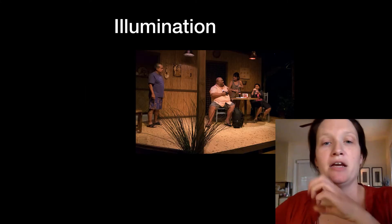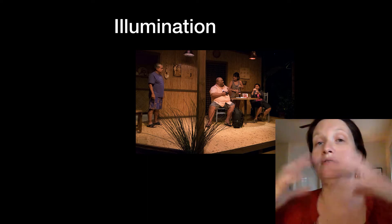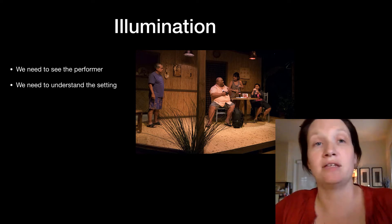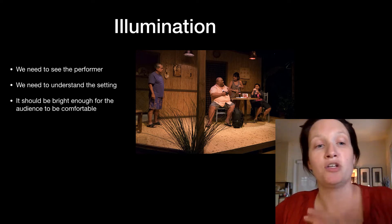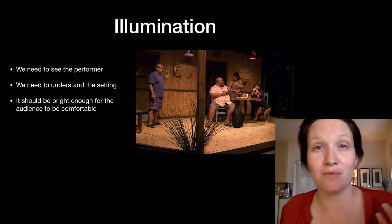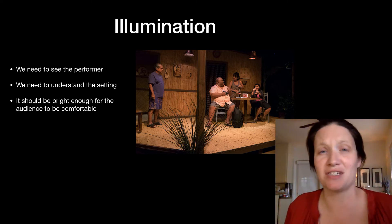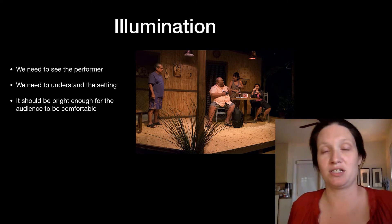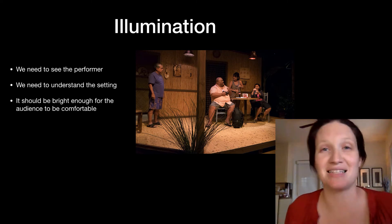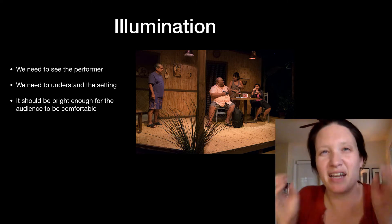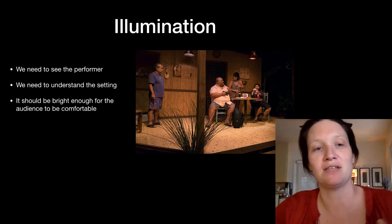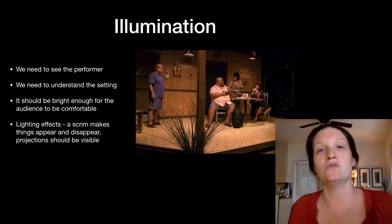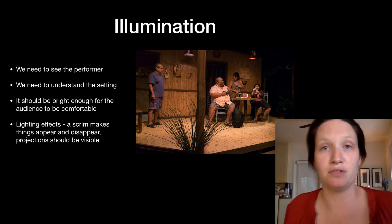Let's talk about illumination. Here is an image from a set that's well lit, illuminated across the whole space. We need to see performers and understand the setting around the performer. It should be bright enough that our eyes are comfortable — if it's too dim, it's hard to see and makes it hard to understand what people are saying. You don't want the audience squinting, so you want enough light that they're comfortable. There are specific lighting effects we can use the property of illumination to achieve.